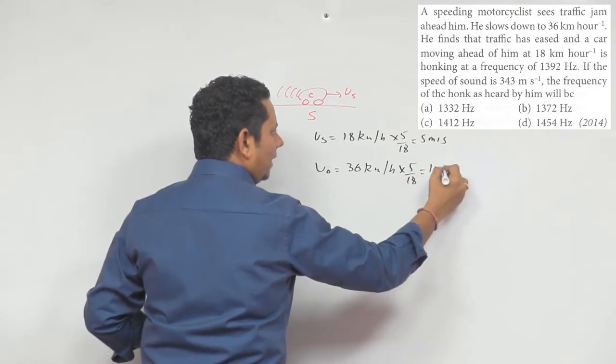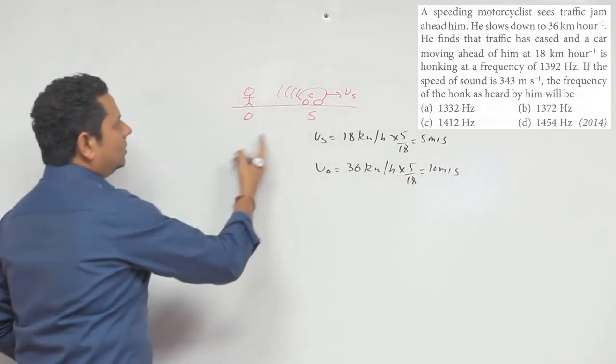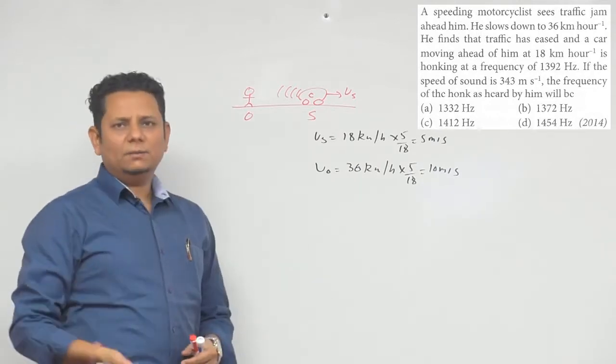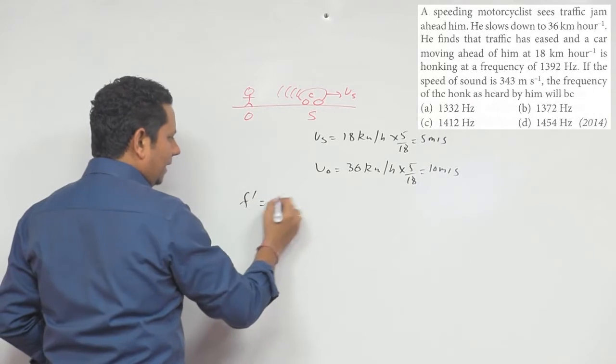So the source is moving away from the observer. Here we can directly apply the Doppler effect formula. Doppler effect says that f' will equal (v + v₀) divided by (v + vs) multiplied by f.